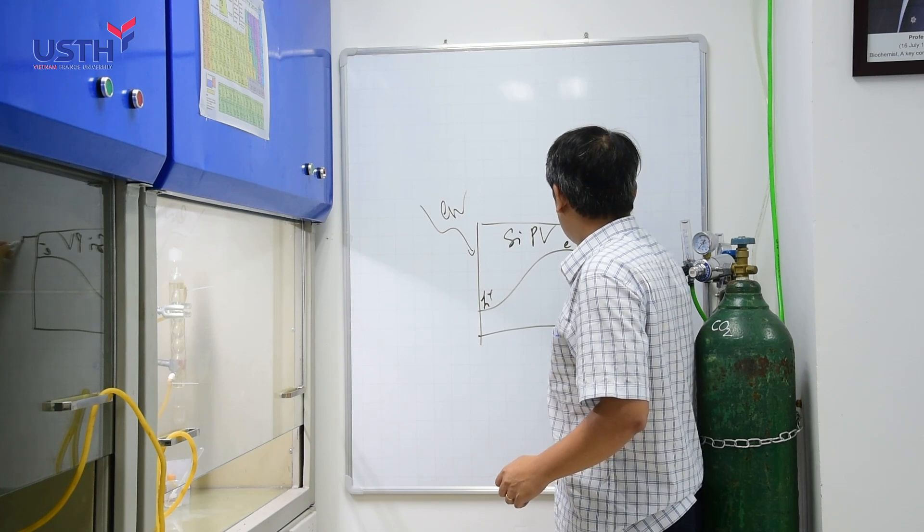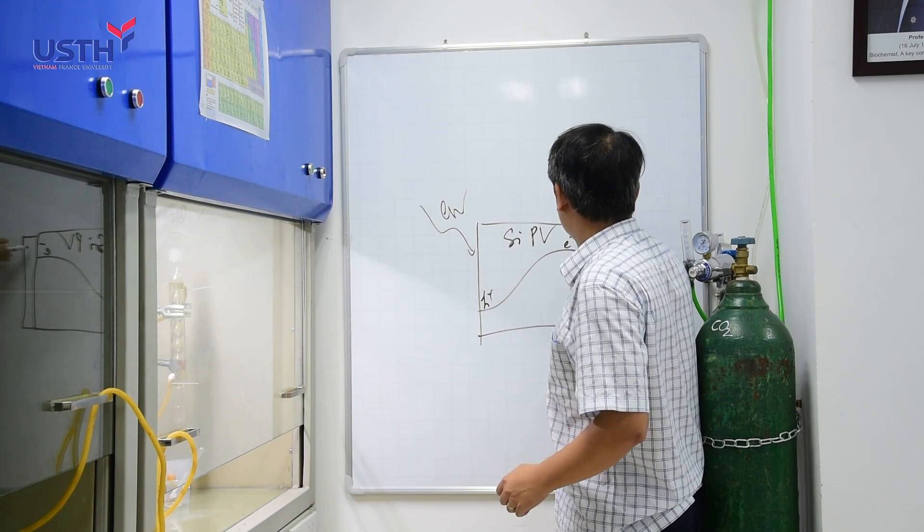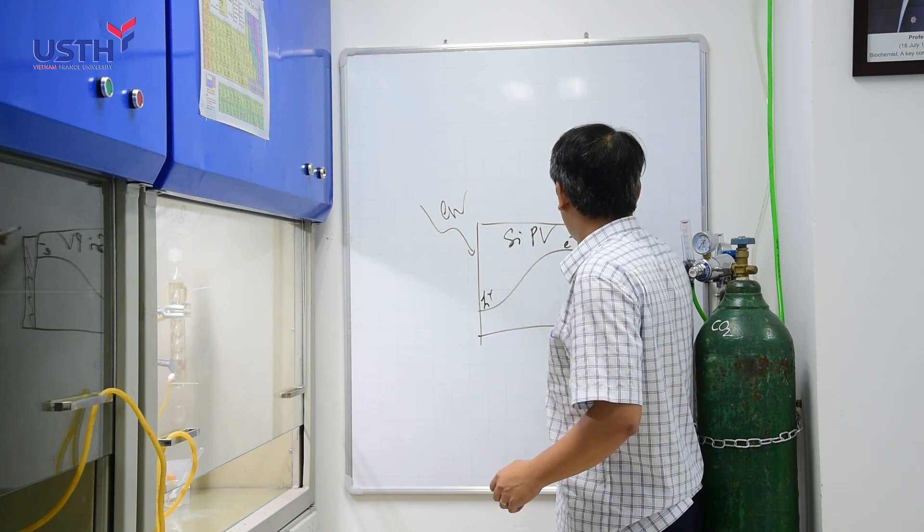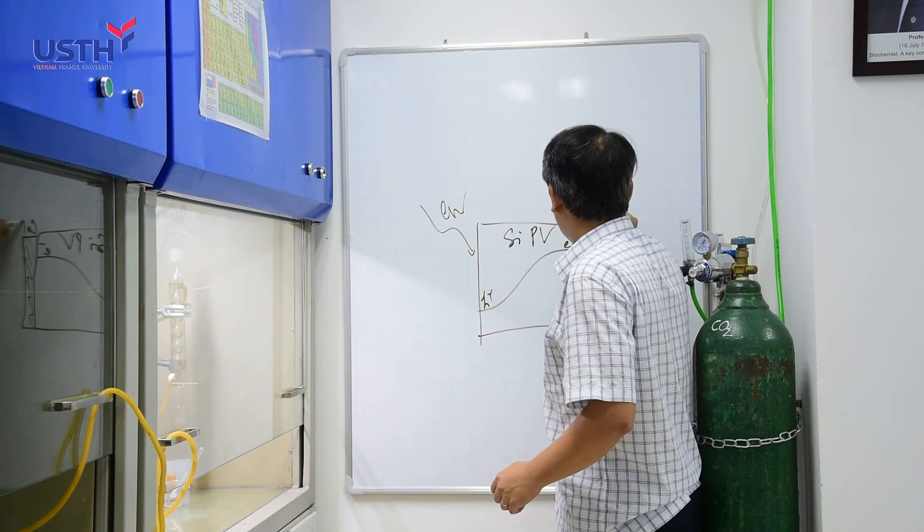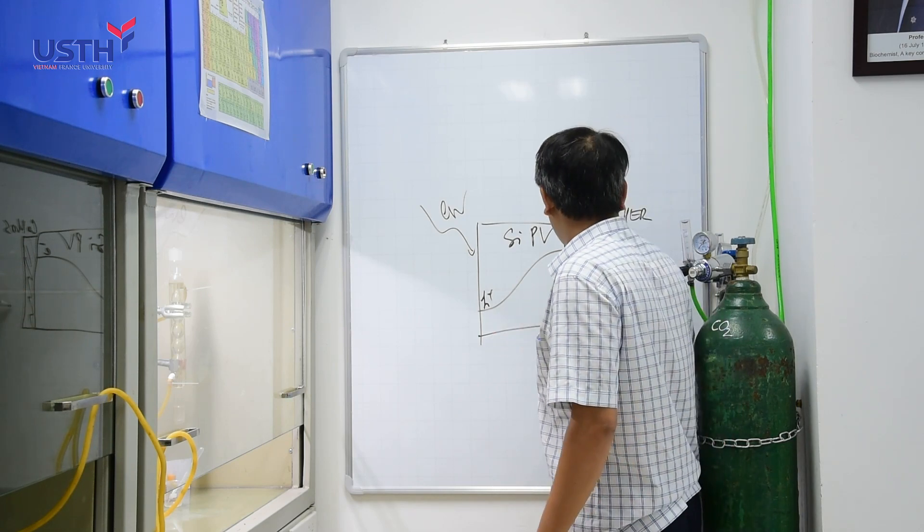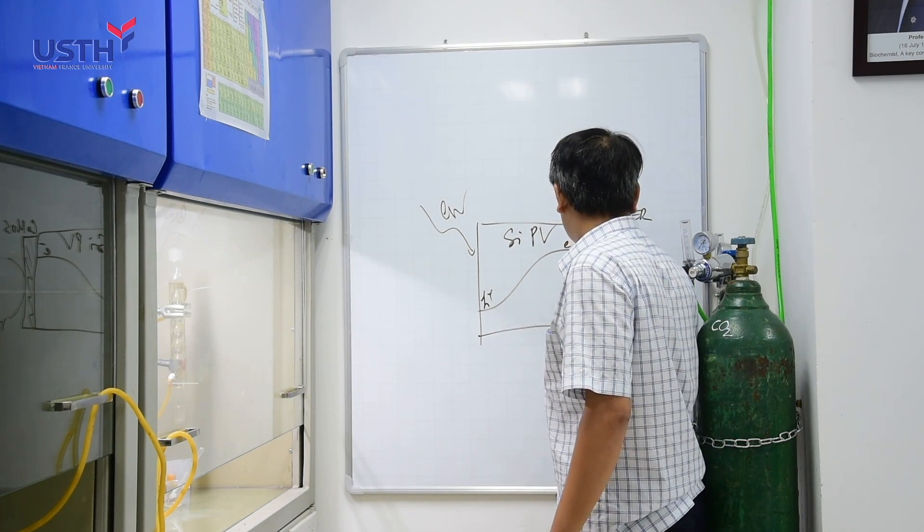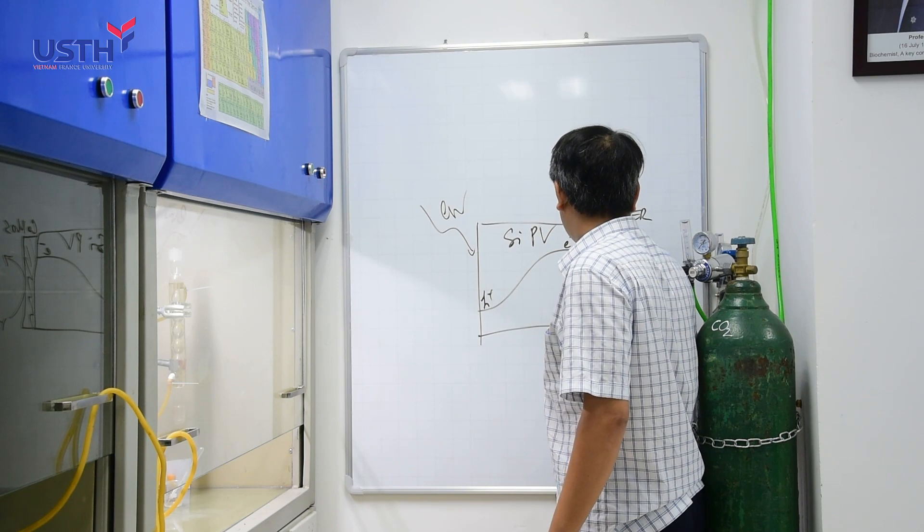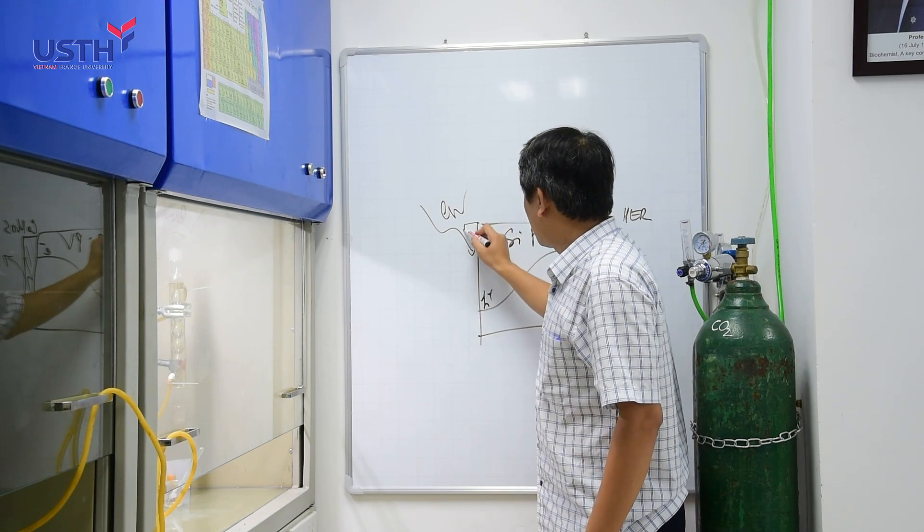So, on the side of the electron escape, we will put a cobalt molybdenum sulfide which is an HER catalyst that will have the reduction of proton into hydrogen. In the other side,